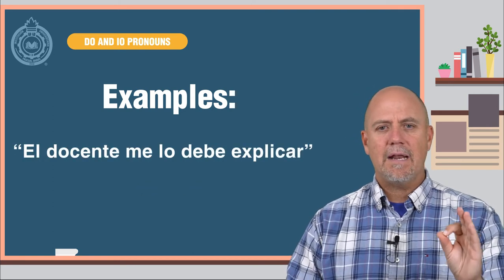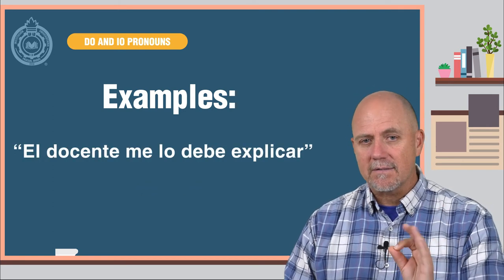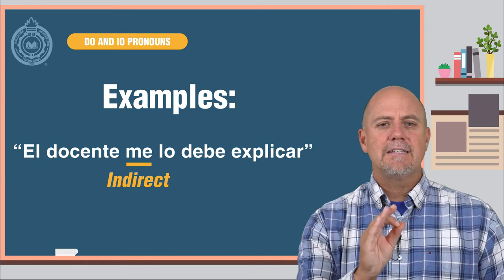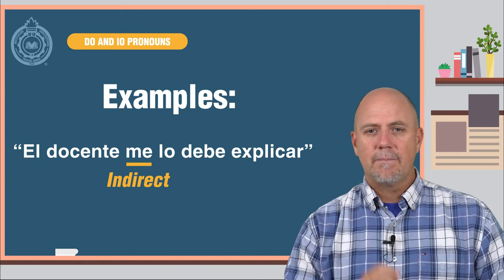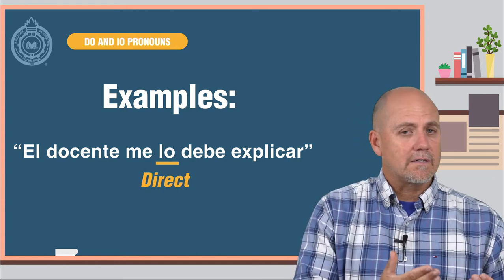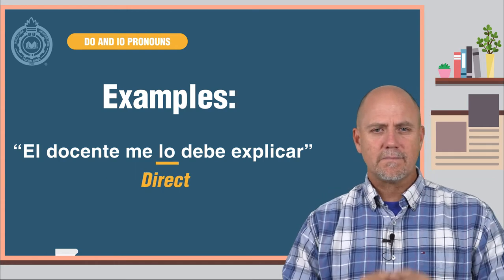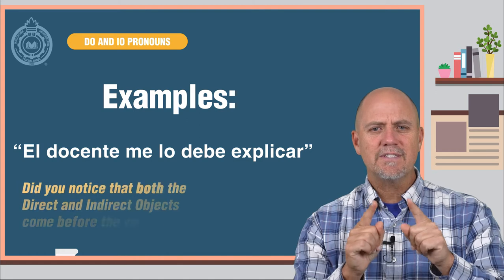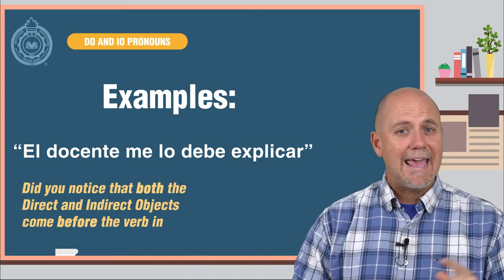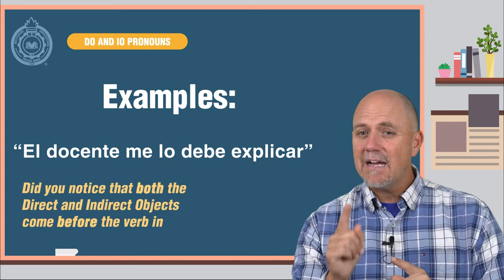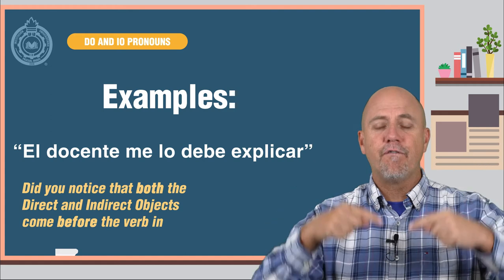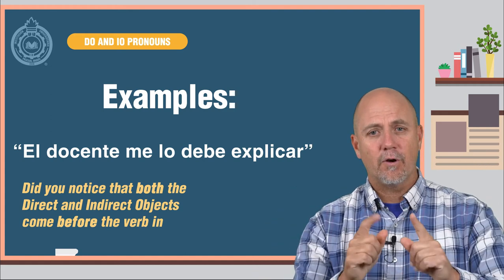"El docente me lo debe explicar." Me is the indirect and lo is the direct. Did you notice that both the direct and indirect objects come before the verb in Spanish?